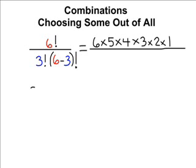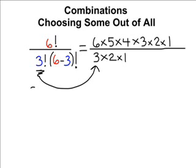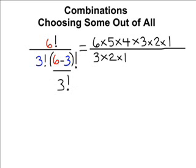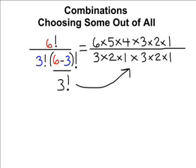Now on the bottom we have to do three factorial which is three times two times one and in parentheses we must subtract six and three first and get three and then take three and do a factorial of that which is also three times two times one.